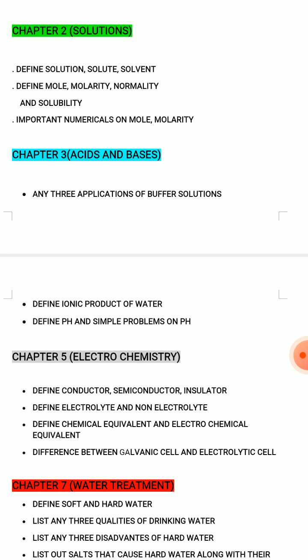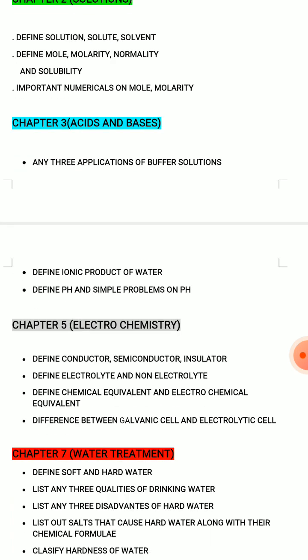Define pH, and from simple problems on pH — pH definition is 1 mark. This is a very simple problem involving pH of a solution and H+ concentration. You have to understand this problem. This is 2 marks or 3 marks.